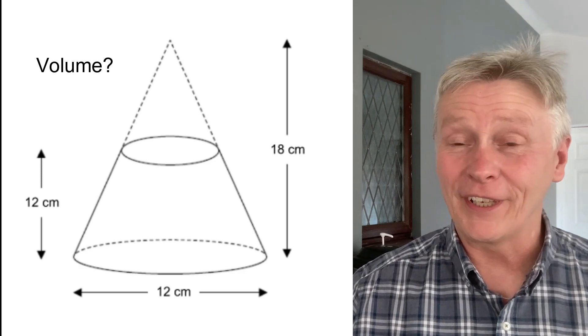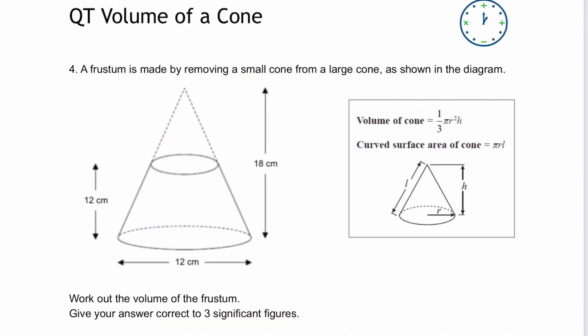Hi, this is a quick three-minute video. This is the fourth question on the worksheet where we're being asked to work out the volume of the frustum, which is made by removing a small cone from a large cone.